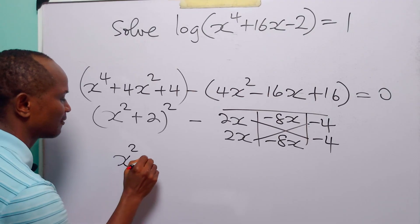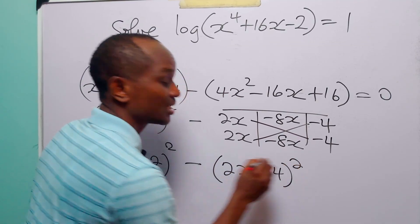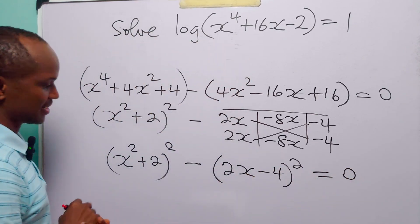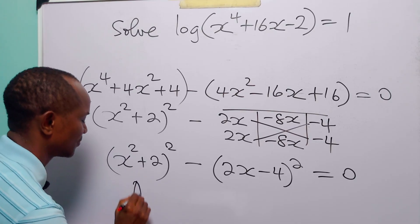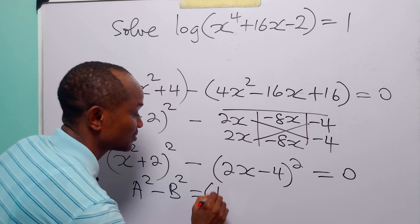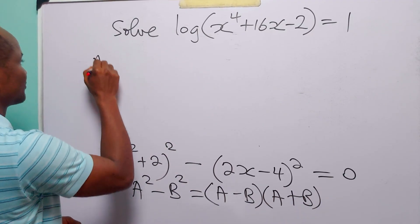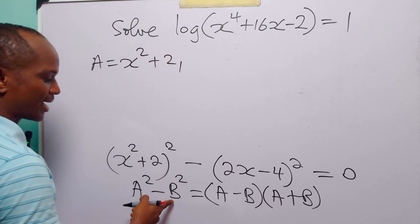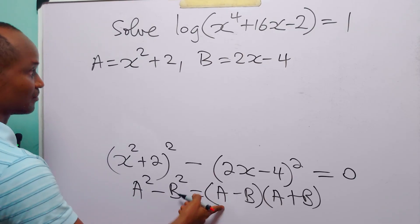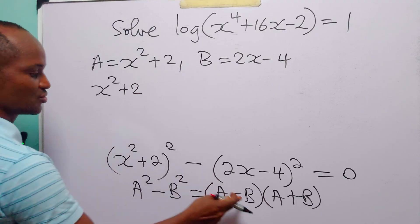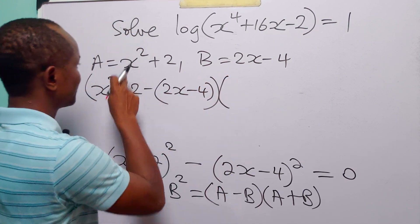So the second group factors as (2x − 4)², meaning our equation becomes (x² + 2)² minus (2x − 4)² equals 0. We can now apply the difference of two squares: a² − b² = (a − b)(a + b), where a is x² + 2 and b is 2x − 4.